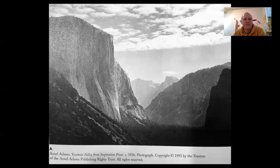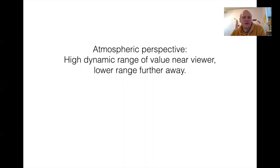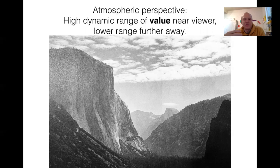Here we've got all kinds of values happening — an Ansel Adams photograph. This is a great photograph to see atmospheric perspective. Atmospheric perspective is where there's a high dynamic range up close to us, with pure darks and pure whites. Further away, we see more middle grays. Up close we see very dark darks, but back into the scene we see sort of these middle grays.